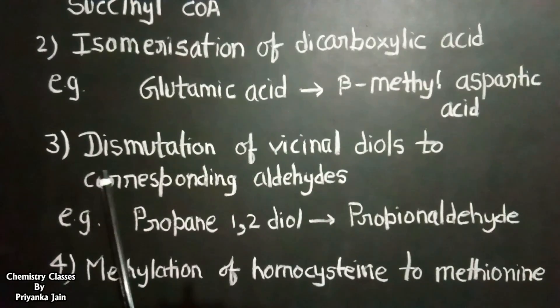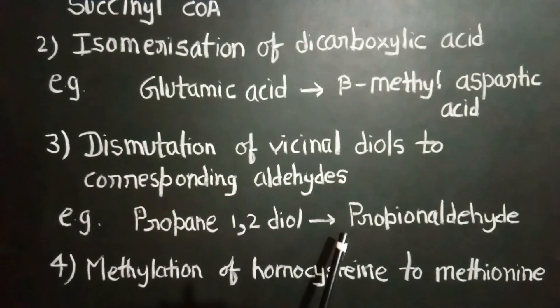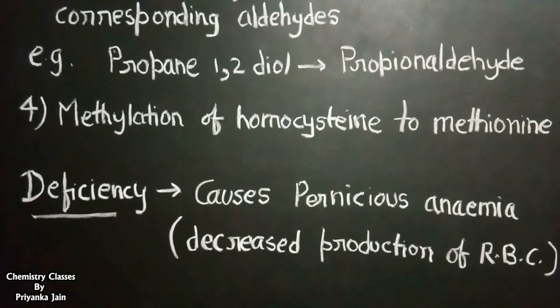Another important process is the dismutation of vicinal diols to the corresponding aldehydes. An example of this reaction is the conversion of propane-1,2-diol to propionaldehyde. Another important process is the methylation of homocysteine to methionine.